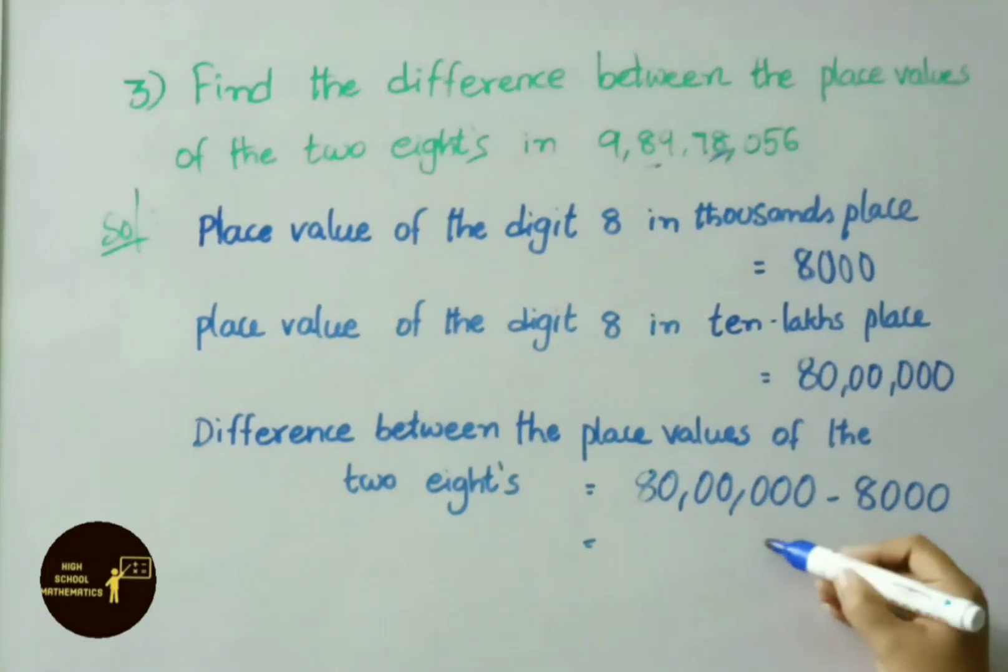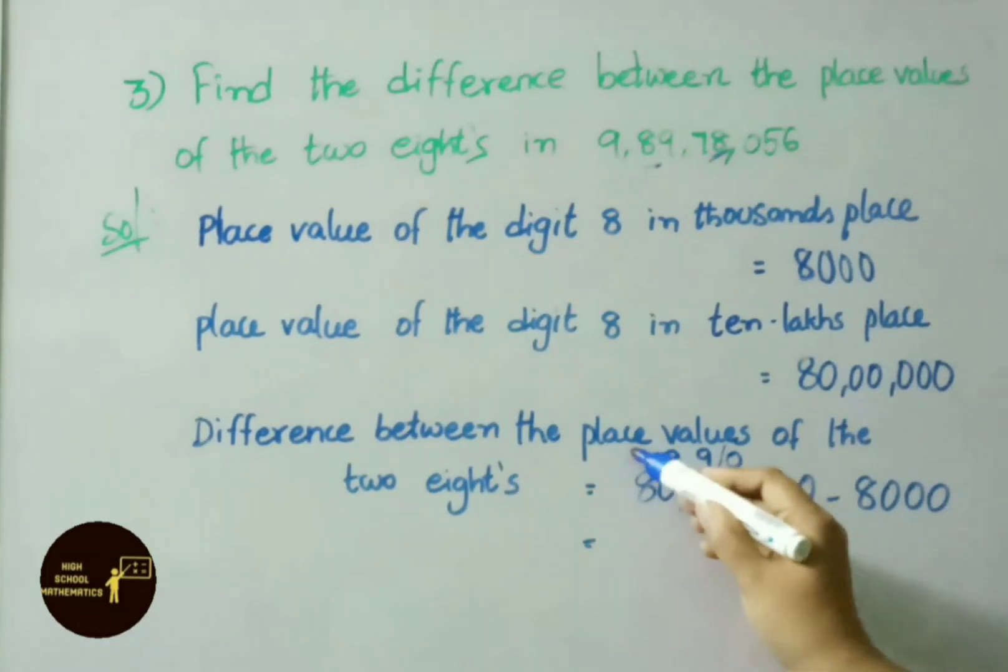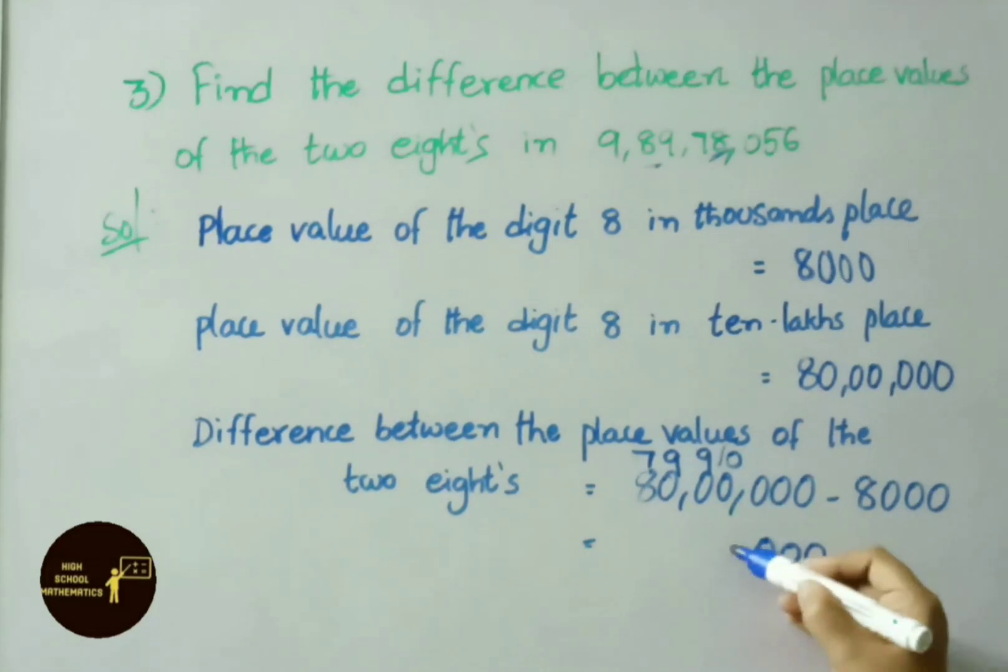Now we have to do subtraction: 80,00,000 minus 8,000. Three zeros, three zeros if we subtract same zeros only. Now from this zero we can't subtract 8. So if we take borrow this zero becomes 10, next one 9, then after 9 and last digit becomes 7. 10 minus 8 is 2. Write down the remaining digits. Separate them by using commas. So the answer is 79,92,000.